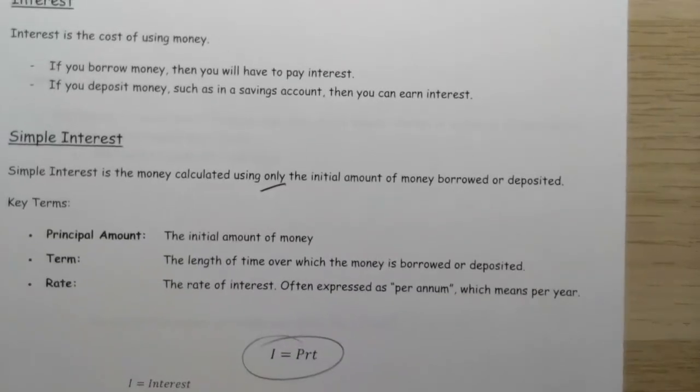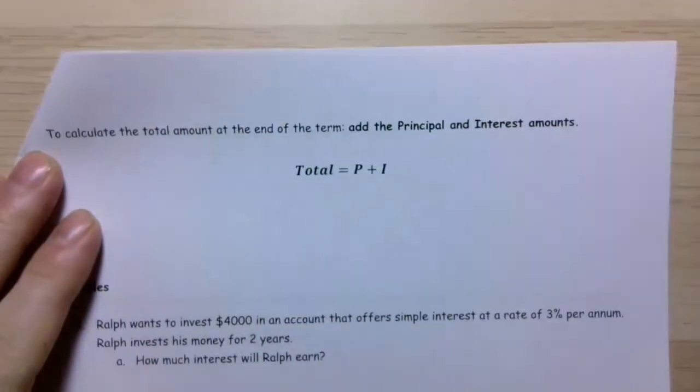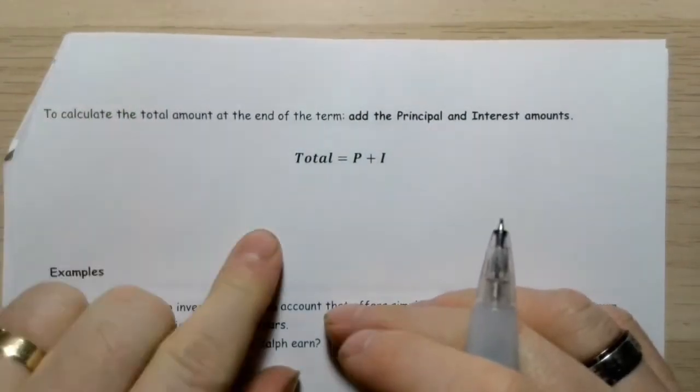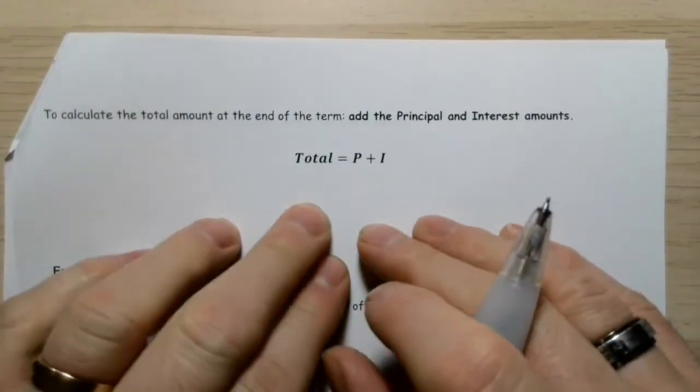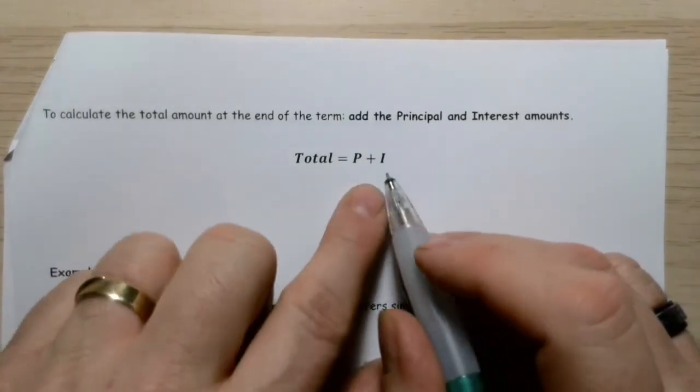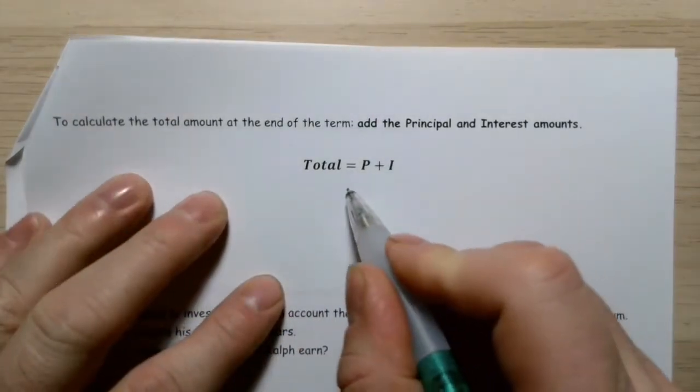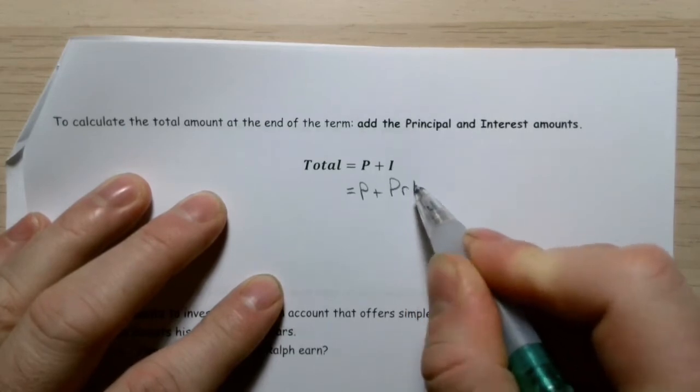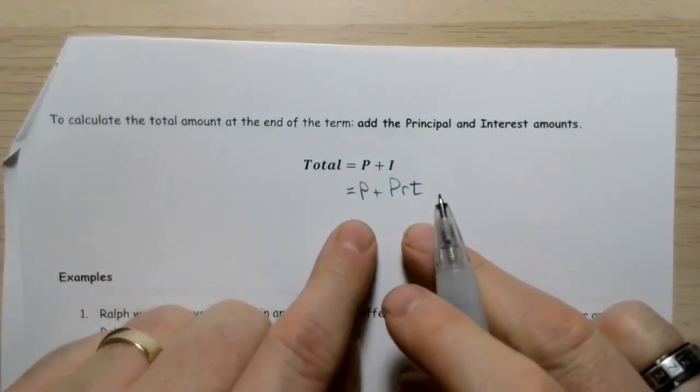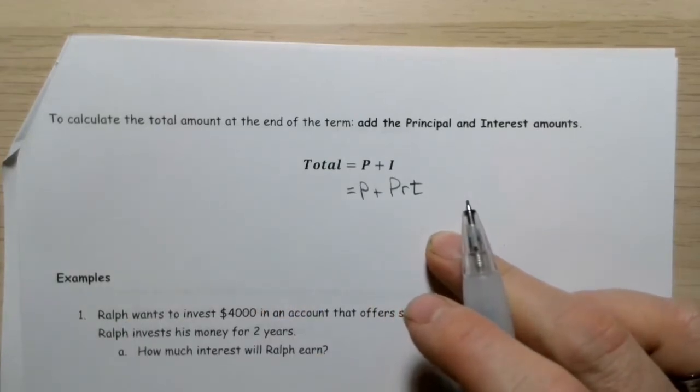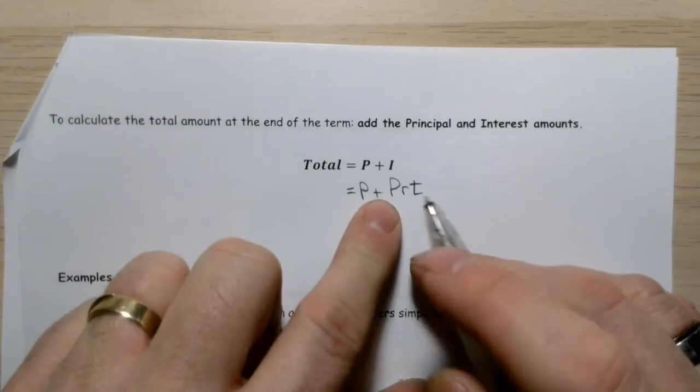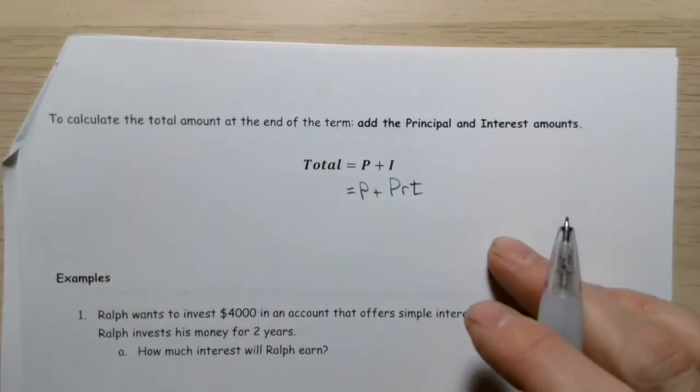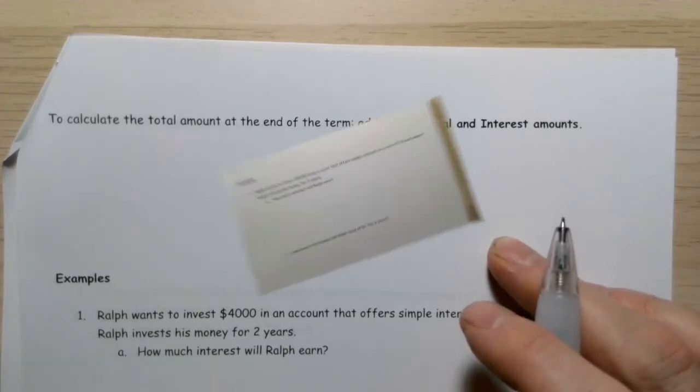Before we look at questions, one other detail: when you get questions asking for the total amount of money, bear in mind that the formula I = PRT only gives you the interest. It doesn't add them together. If you want the total, you need to take the principal and add the interest. So Total = P + I. That formula just gives the interest, not how much money is in the account or how much you now owe.